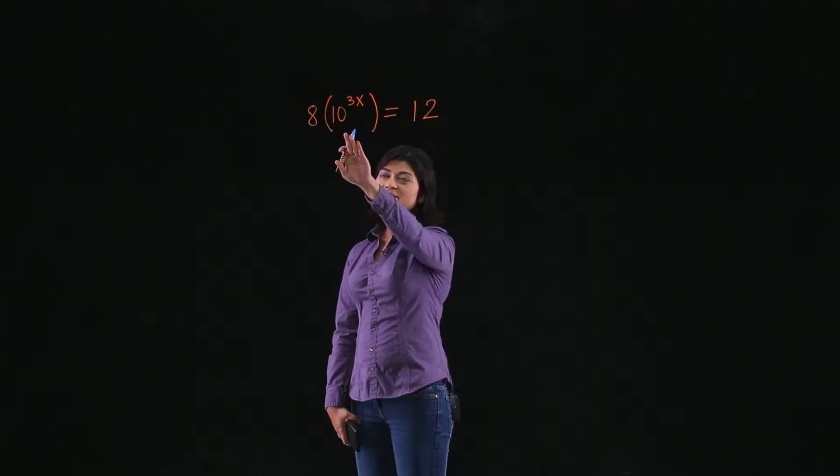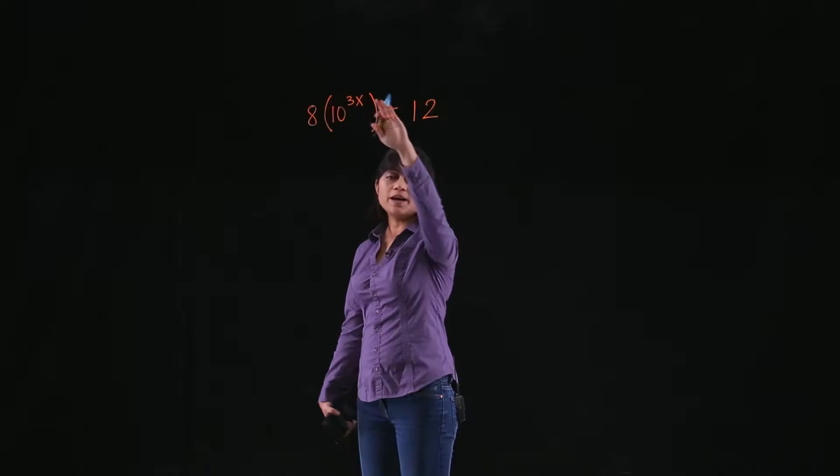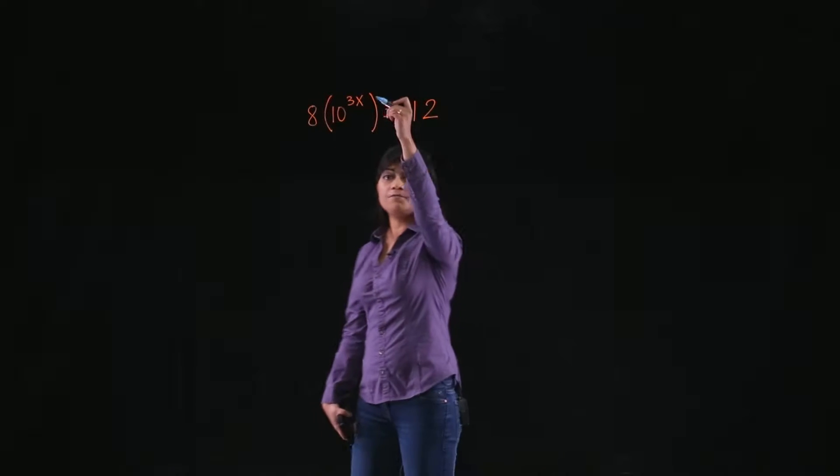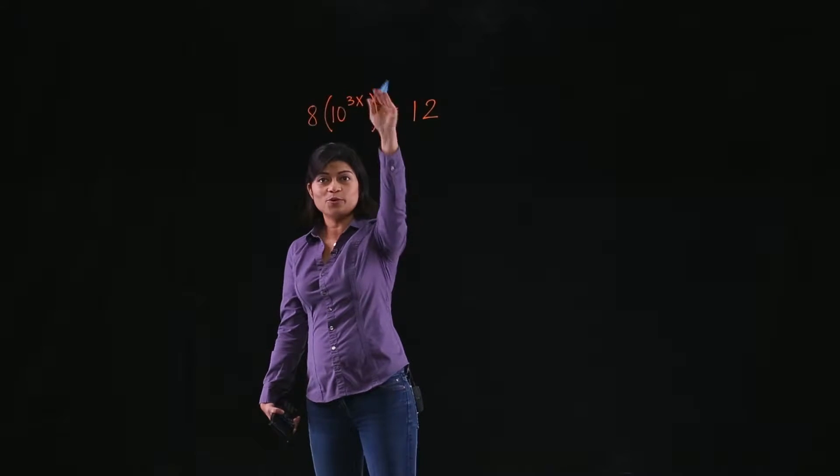Now, notice that this equation has an exponential function, 10 to the power 3x. And we have to solve for x. But x is in the exponent.